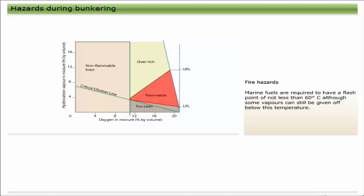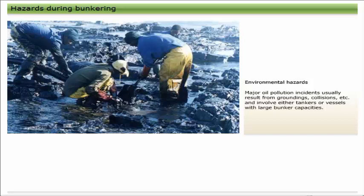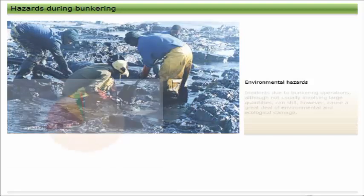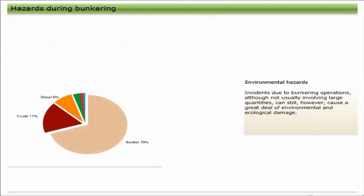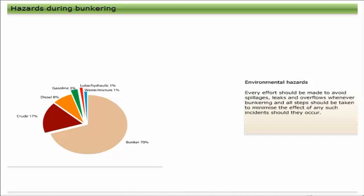Marine oil pollution has a detrimental effect on the environment and local ecology, harming marine life and seabirds. Major oil pollution incidents usually result from groundings, collisions, etc., and involve either tankers or vessels with large bunker capacities. Incidents due to bunkering operations, although not usually involving large quantities, can still cause a great deal of environmental and ecological damage because most bunkering operations are carried out either in port or in near coastal waters. Every effort should be made to avoid spillages, leaks, and overflows whenever bunkering, and all steps should be taken to minimize the effect of any such incidents should they occur.